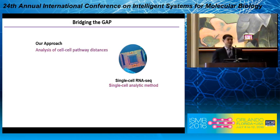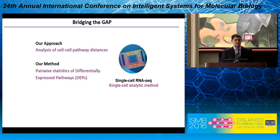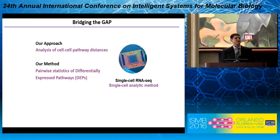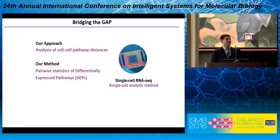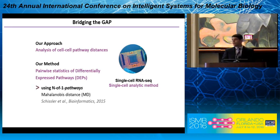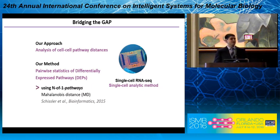Our approach, the analysis of cell-to-cell pathway distances, focuses on pairwise statistics of differentially expressed pathways. Differentially expressed pathways, as an analog to differentially expressed genes, is the core idea behind this framework. We have paired statistics that we aggregate and view from different perspectives. We borrow from our single-subject studies the N-of-1 pathway Mahalanobis distance to compute these pairwise statistics of DEPs — differentially expressed pathways.